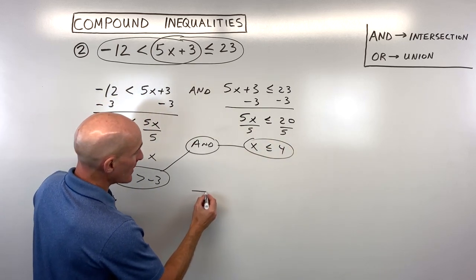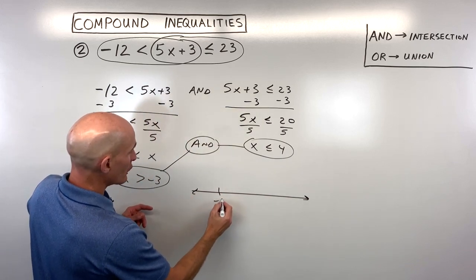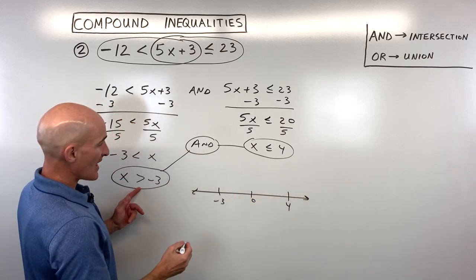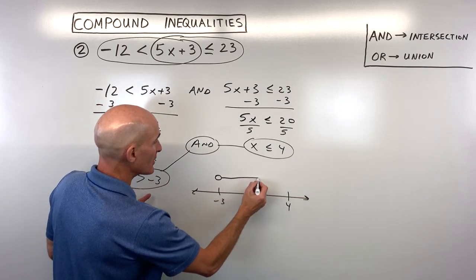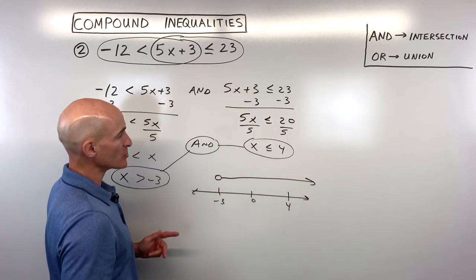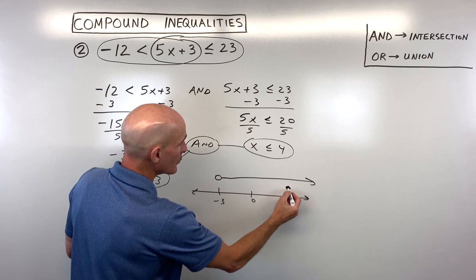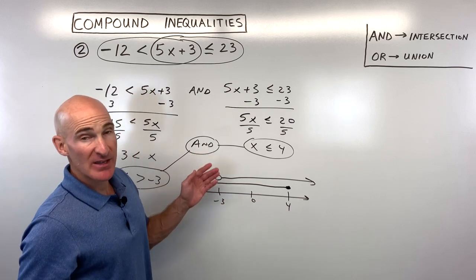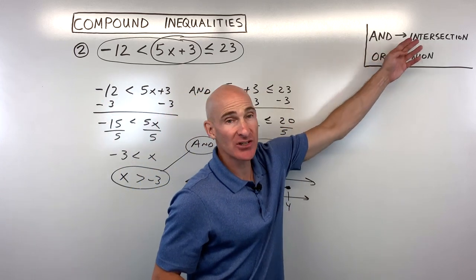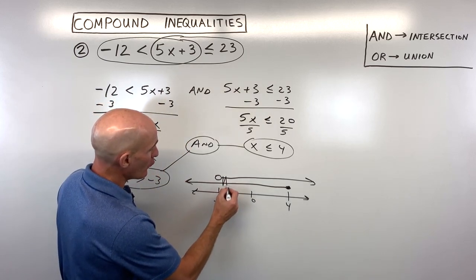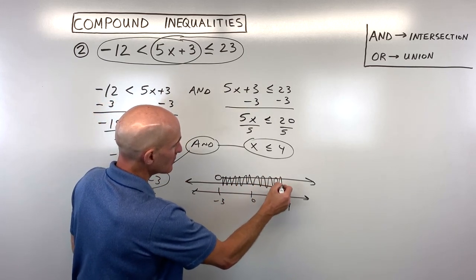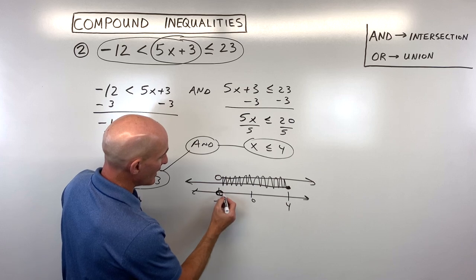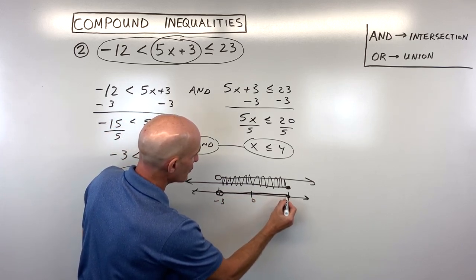Graphically on the number line, we have negative 3 on the left and 4 on the right. X is greater than negative 3, so we go to the right with an open circle. X is less than or equal to 4, so we draw a closed circle at 4 and go left. The 'and' means the overlap or intersection of the two sets. Our final answer is from negative 3 to 4, including 4.